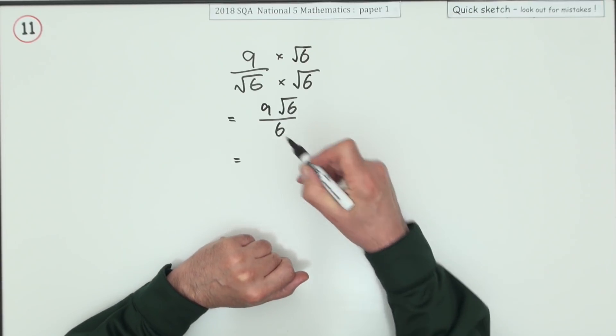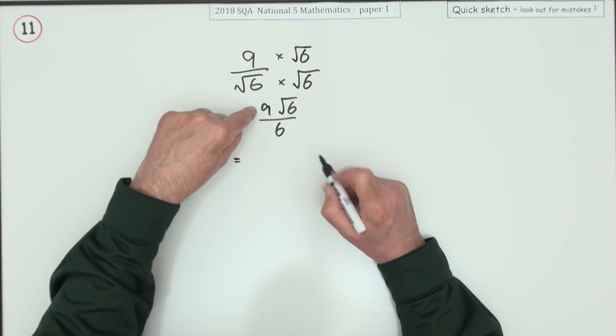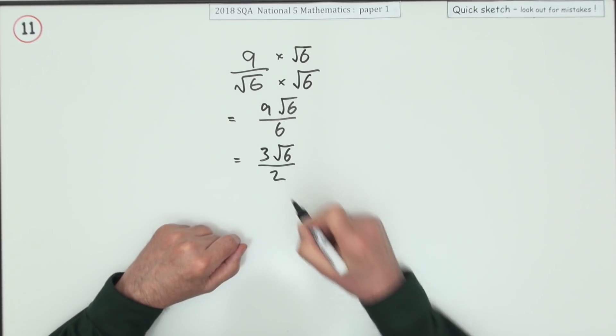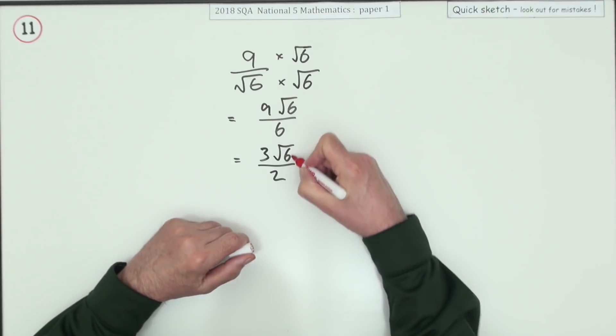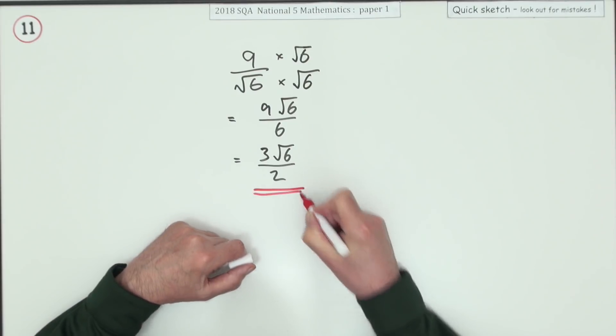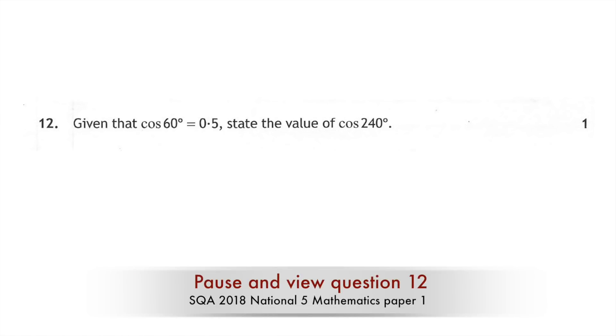Nine and 6 have got a common factor of 3. That's why it said simplify it. So 3 into 9 goes 3, and 3 into 6 goes 2. And even though root 6 looks as if it should simplify further, it doesn't. Three root 6 over 2.